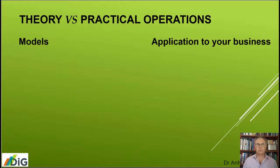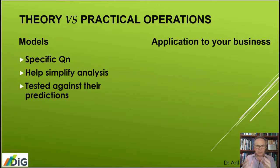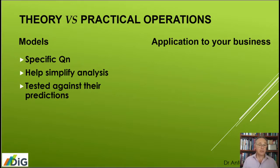So there are models and then there's the application to your business. First of all, a model answers a specific question — it's entirely delimited, and that's what makes it useful because models are simplifications. They make it easier to analyze something, as our brain cannot deal with too many variables at once. So it makes analysis easier, but as a result it's an abstraction. They're tested against their predictions to see if what they predict works, so they might work in a certain context but not in others.